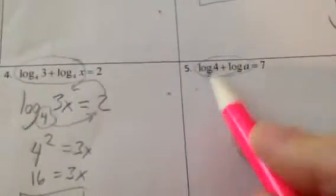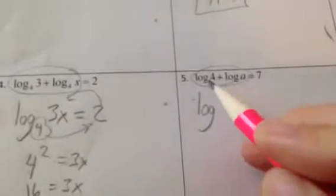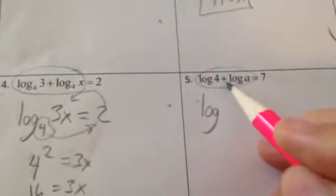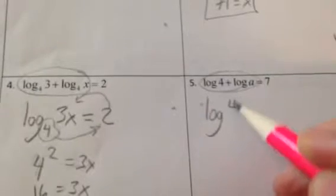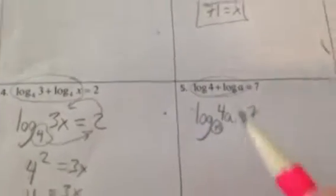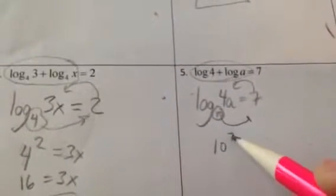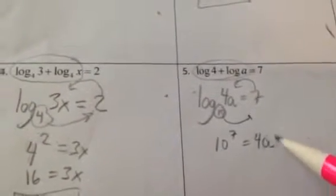Again, smoosh the logs on one side of the equation together. So the log, they both have the same base, so we're allowed to do it. If I'm adding logs, I'm multiplying the insides. When we don't write a base, it's assumed to be 10. So I know that 10 to the 7th equals 4a.